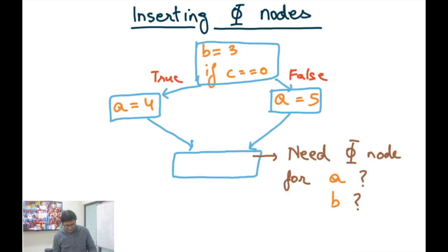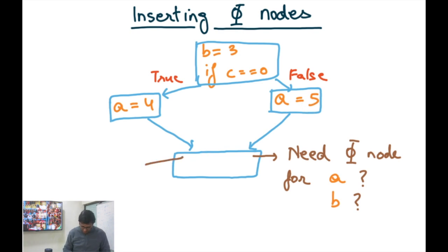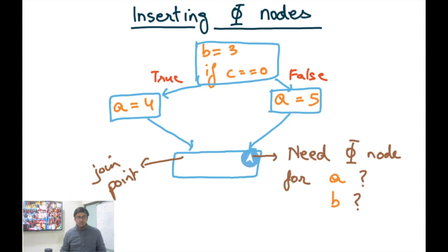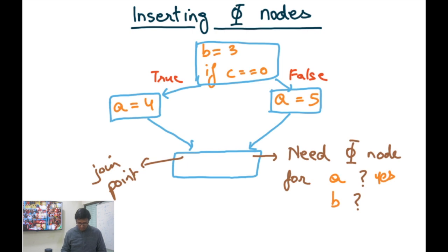To see this with an example: say we have a program where b equals 3, then we check whether c equals zero. If true, a equals 4; if false, a equals 5 — and then we have a join point. Do we need a phi node for a? Yes, because two different versions — a1 and a2 — are flowing in. Do we need a phi node for b? No, because it's the same version of b traveling on both paths.